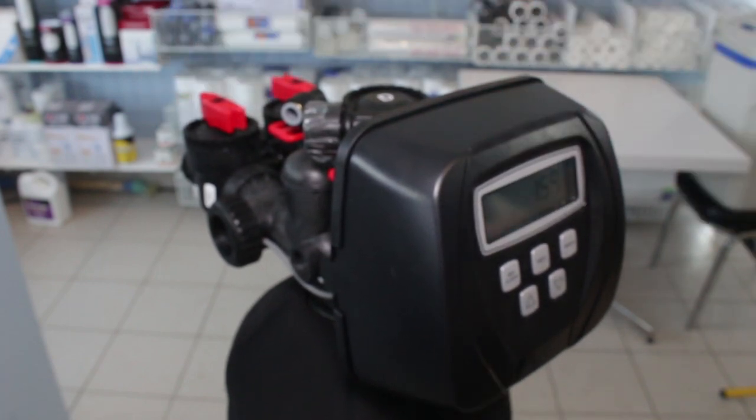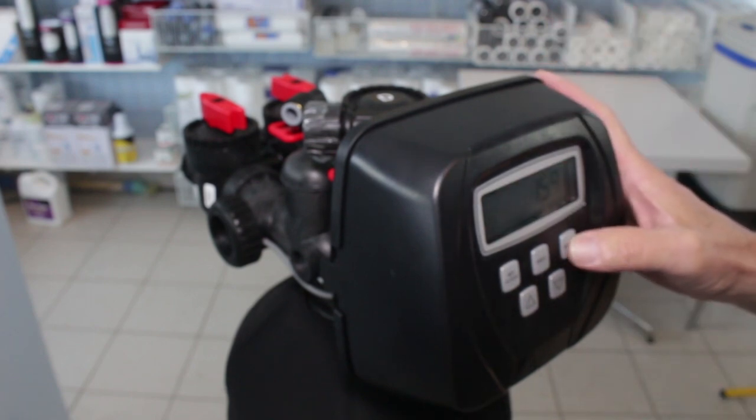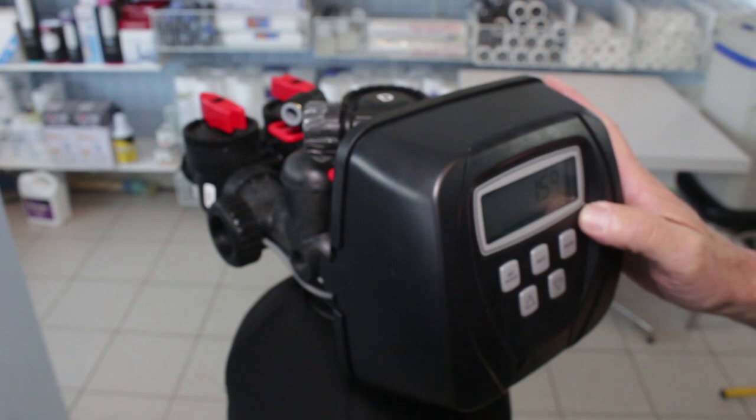If the water softener has been off or the iron sulfur filter, whatever this is, if it's been off for a period of time, you can regenerate it now. Press down the button, hold it down for five seconds, regenerate it, you're back in business.